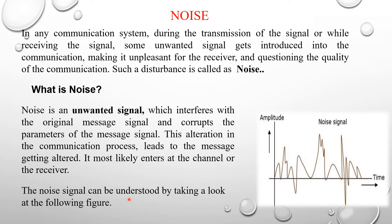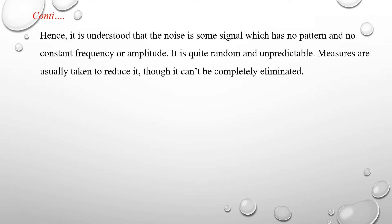The noise signal can be understood by taking a look at the following figure. The vertical axis is the amplitude and the horizontal axis is time. The noise signal has a random nature — it is an irregular signal whose amplitude varies randomly from minimum to maximum. Hence, it is understood that noise is a signal which has no pattern.